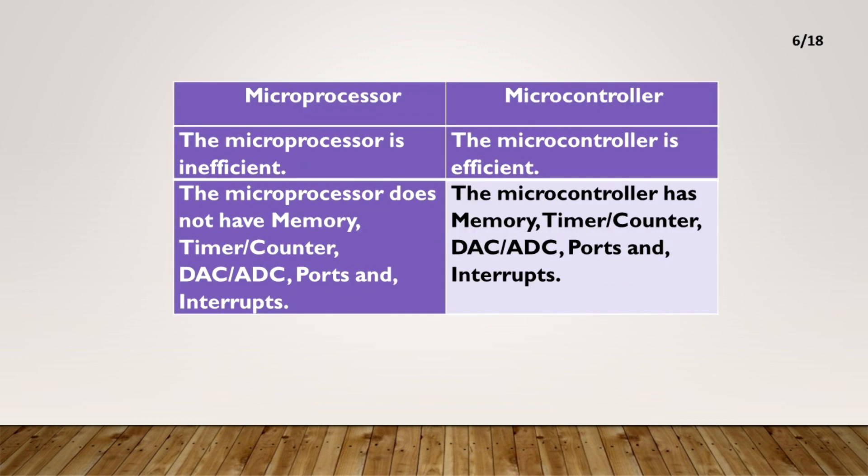The microprocessor is inefficient. The microcontroller is efficient. The microprocessor does not have memory, timer or counter, DAC or ADC, ports and interrupts.